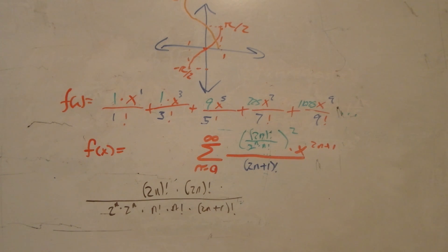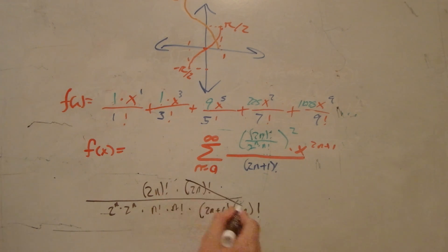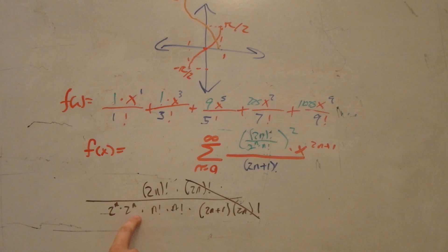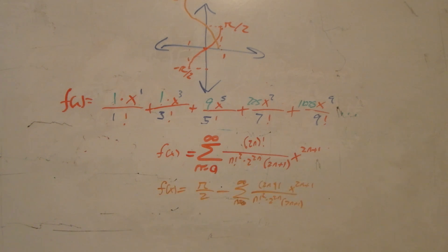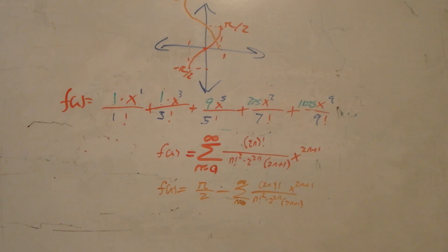The final step is taking this and just simplifying it. We can write (2n plus 1) factorial as (2n plus 1) times (2n) factorial and cross out those two. 2 to the n times 2 to the n can be written as 2 to the 2n, and that's it. That all simplifies down to this summation, which we can use to define our arc cosine as well. Thank you for watching, and stay around because in the next video we're going to be playing around with this.